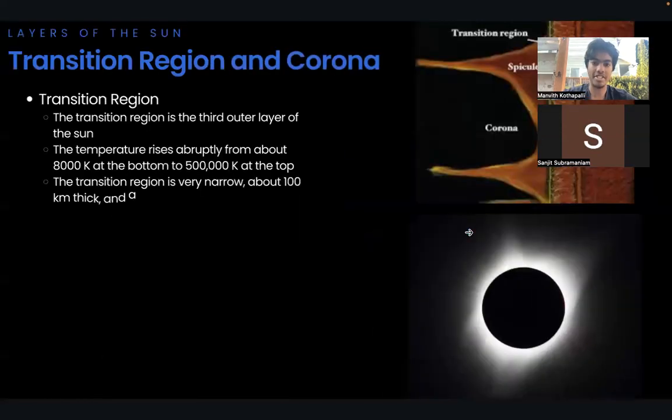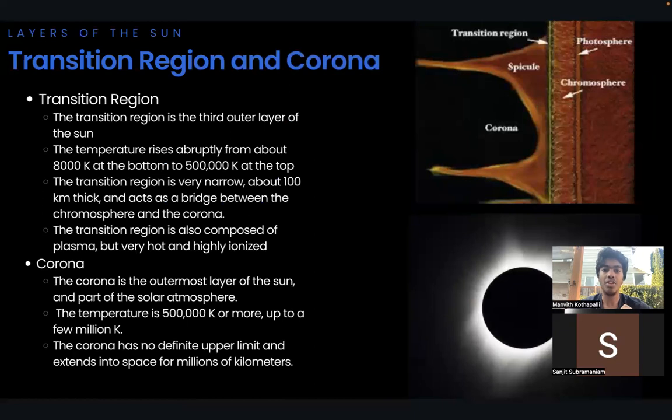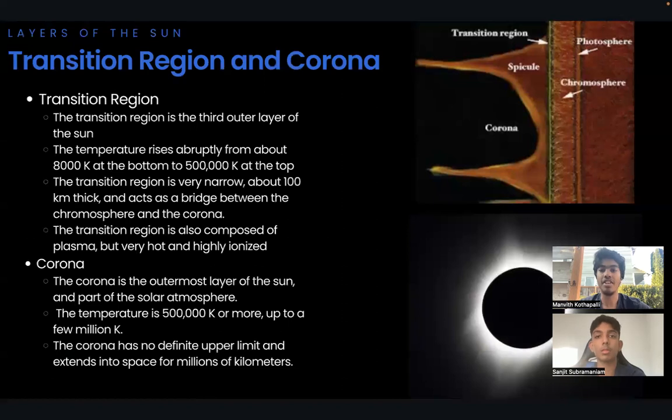Now let's talk about the transition region. The transition region is the third outer layer of the Sun and part of the solar atmosphere. The temperature rises abruptly from 8,000 Kelvin at the bottom to 500,000 Kelvin at the top. The density is very low, about 10 to the power of negative 9 grams per centimeter cubed or less. The transition region is very narrow, about 100 kilometers thick and acts as a bridge between the chromosphere and the corona. The transition region is also composed of plasma but very hot and highly ionized.